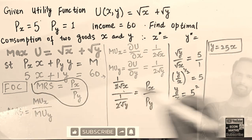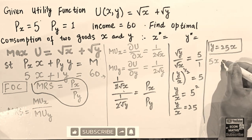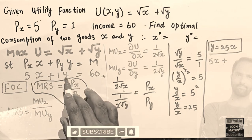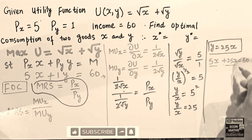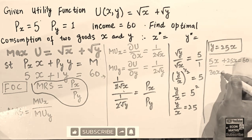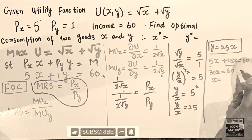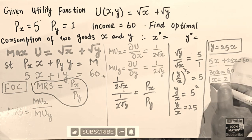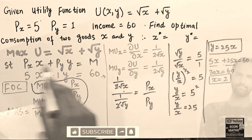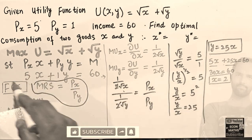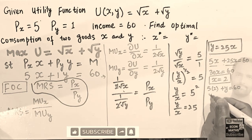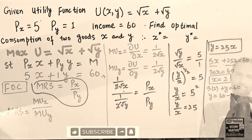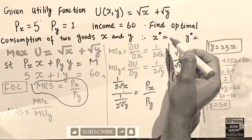Plugging y = 25x into the budget constraint 5x + y = 60, we get 5x + 25x = 60, so 30x = 60, which gives x = 2. The consumer will consume 2 units of good x. Substituting x = 2 back: 5(2) + y = 60, so y = 60 − 10 = 50.